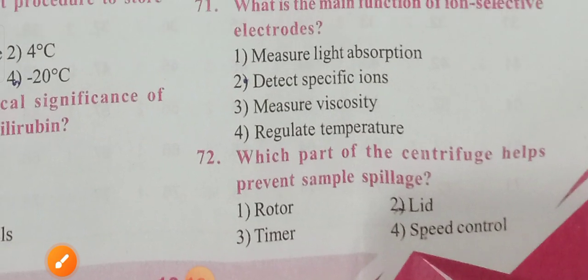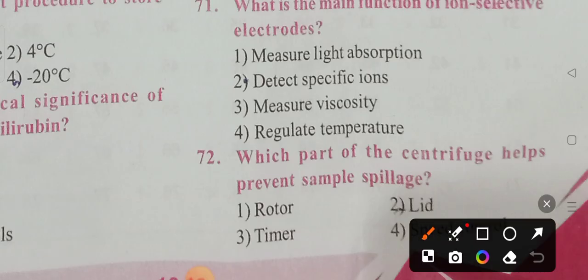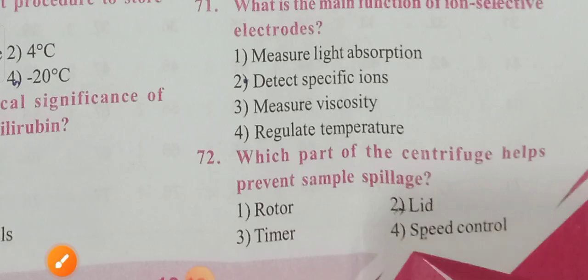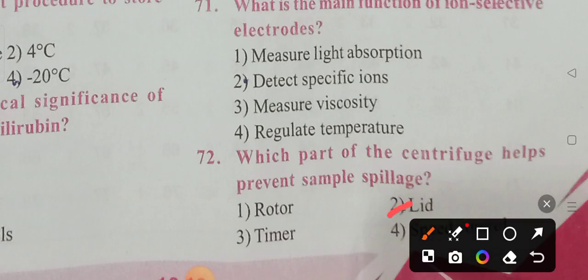Question 72: Which part of the centrifuge helps to prevent sample spillage? Options: rotor, lid, timer, speed control. Option 2 is the correct answer — the lid is the part of the centrifuge that helps to prevent sample spillage.